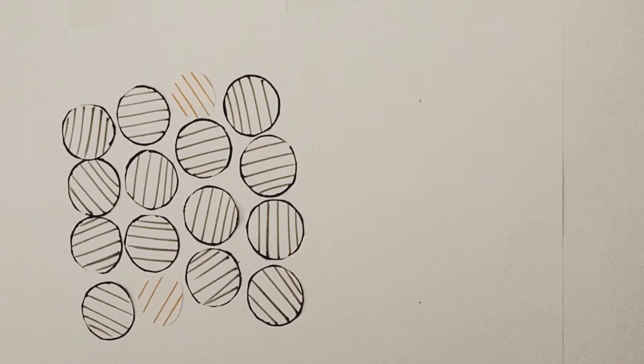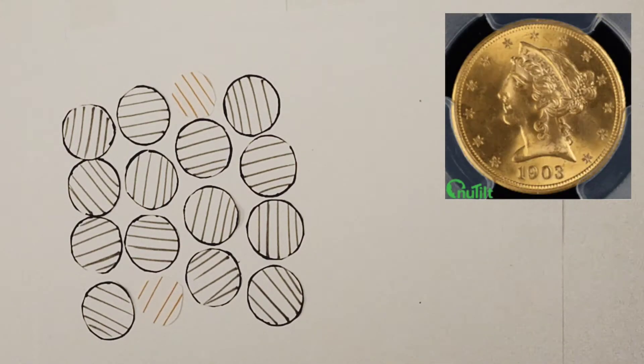The reason we use cupronickel is that it's harder than both the pure metals. It's relatively cheap, it's lustrous, therefore it's very shiny and attractive.